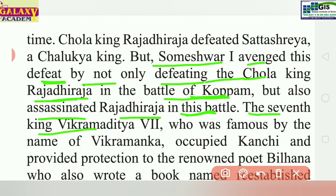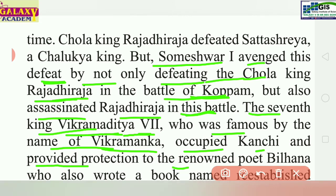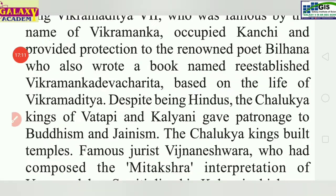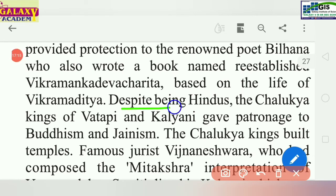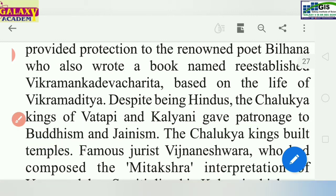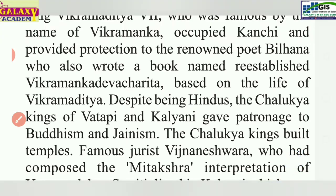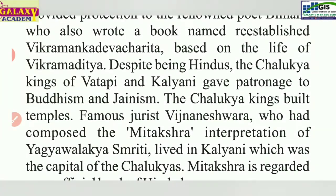The seventh Chalukya king, Vikramaditya VII, famous by the name Vikramanka, occupied Kanchi and provided protection to the renowned poet Bilhana. Despite being Hindu, the Chalukya kings of Vatapi and Kalyani also patronized Buddhism and Jainism.